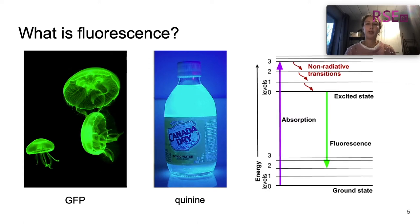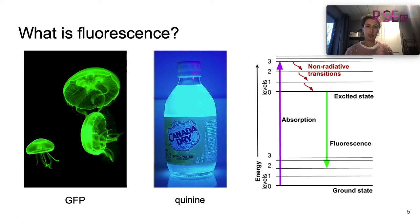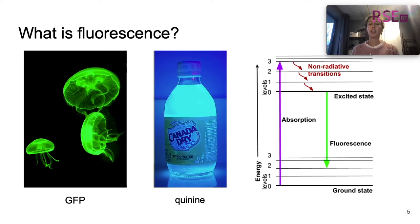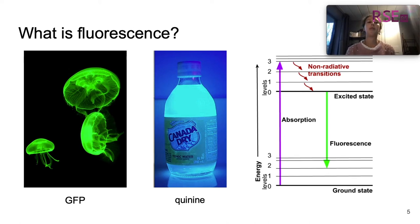You can find fluorescent proteins in nature. For instance, jellyfish carry the GFP, or the green fluorescent protein. They exhibit a bright green light when they are exposed to UV light. The scientists Tsien, Shimomura, and Chalfie were awarded the 2008 Nobel Prize in Chemistry for their discovery and development of the green fluorescent protein.